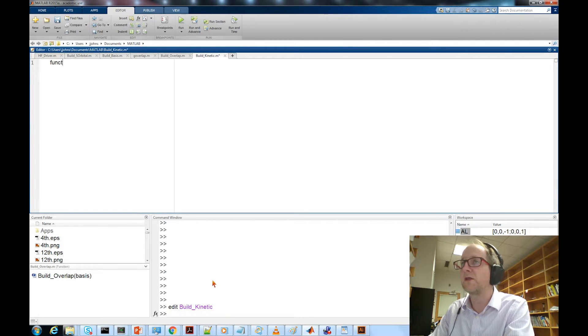Just like our build overlap, this is going to be a function that outputs a matrix based on the basis set of basis functions. The first thing we need to know is how many basis functions we have, so we take the size of that. Then we initialize our kinetic energy matrix to be zero everywhere.